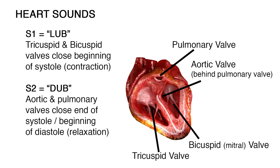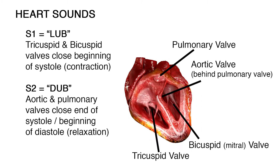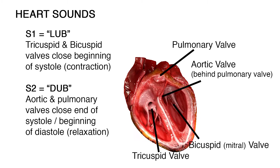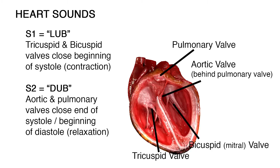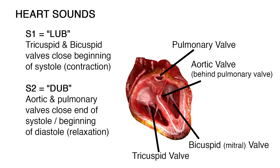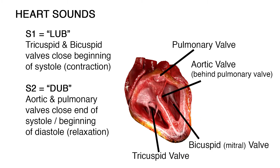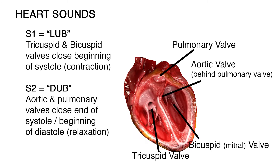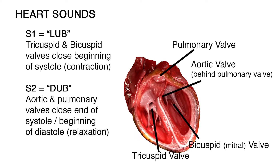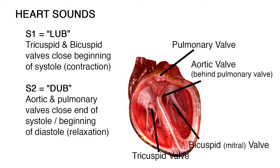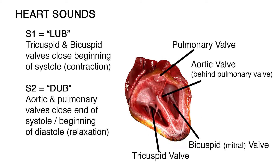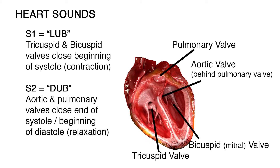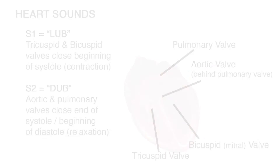These valves then snap shut, making the second heart sound, S2, or the 'dub' in lub-dub. This is the end of systole and the beginning of diastole. At the same time, the tricuspid and bicuspid valves just opened, and the process repeats.